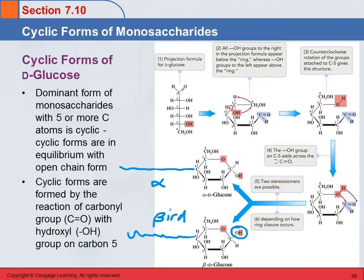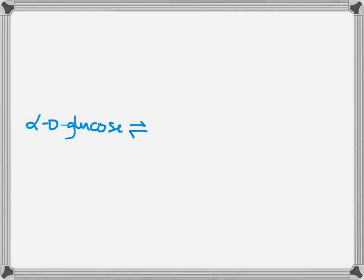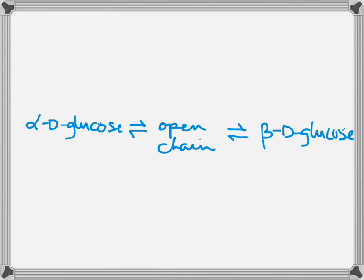On page 273 it gives the equilibrium. Alpha-D glucose, the cyclic form, is in equilibrium with the open chain, which is in equilibrium with the beta form, and it goes back and forth. For glucose, 63% of it is in the beta form, 37% in the alpha form, and less than 0.1% is actually found in the straight chain form.